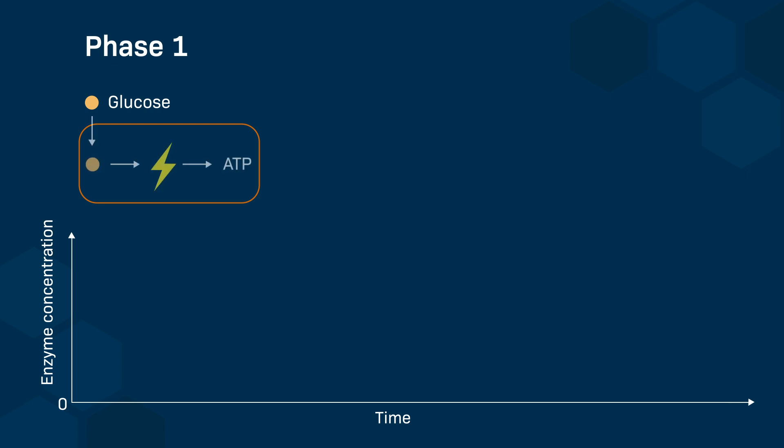Glucose in the growth media is taken up by the bacteria and broken down by glycolytic enzymes to produce ATP, the form of energy that bacteria use to survive. During this phase, the concentration of glycolytic enzymes is high and remains constant.